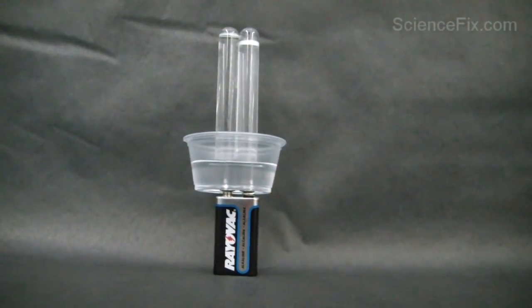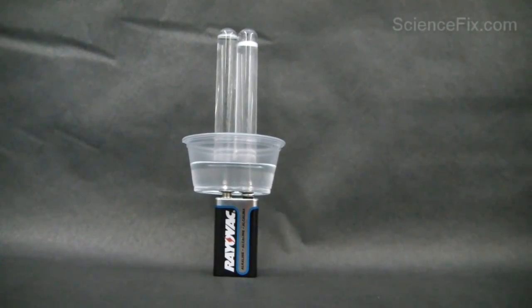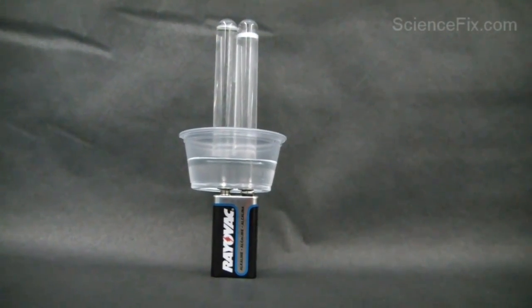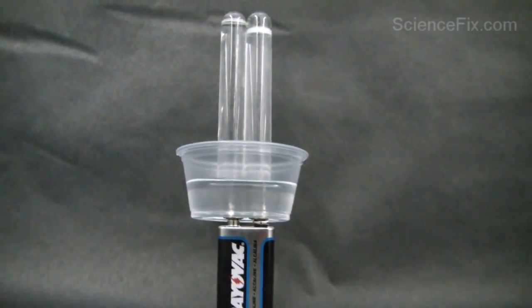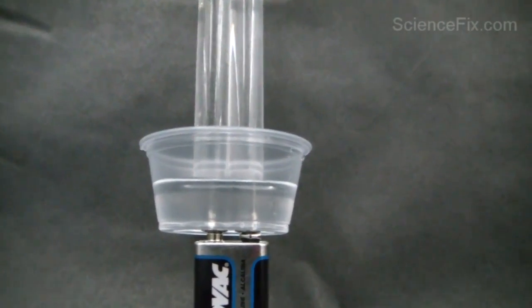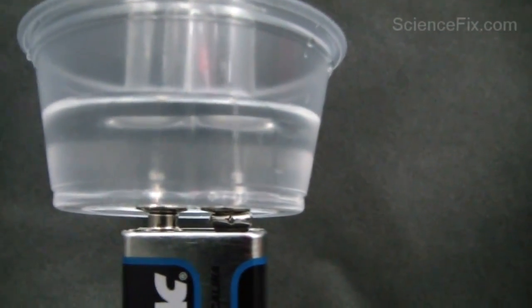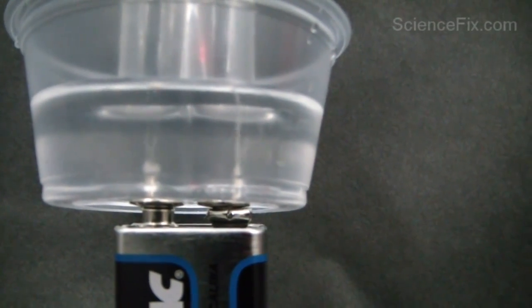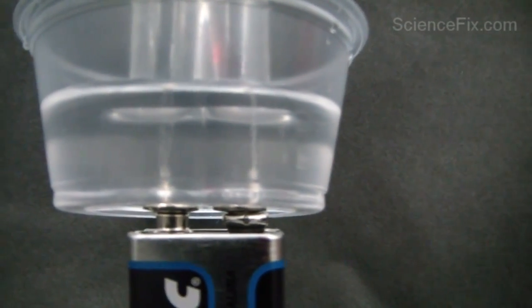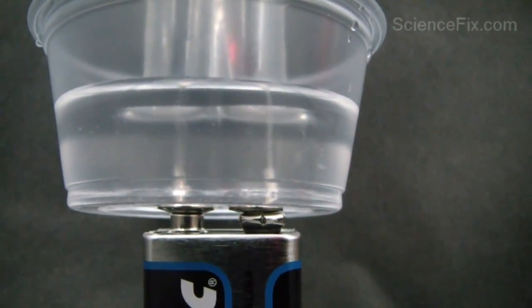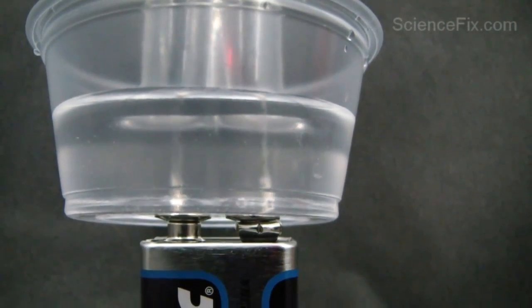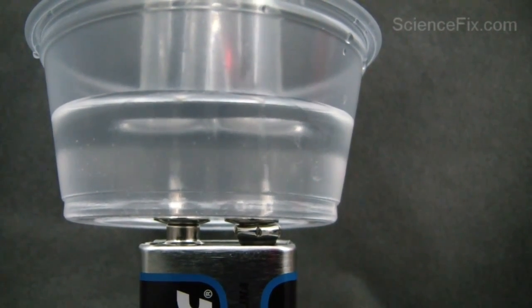Now you set them on the leads and the electricity can flow between the two pushpins. Electricity is flowing through the water and that's enough energy to break apart the water, make it undergo chemical reaction so that the H2O gets broken apart into H2 and O2 - hydrogen gas and oxygen gas.